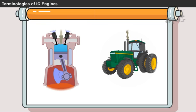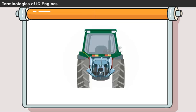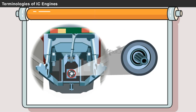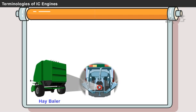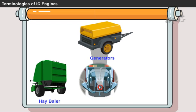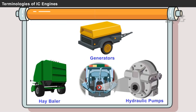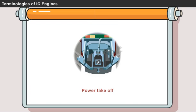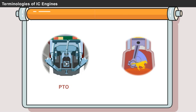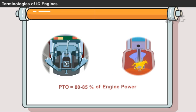Now, I will explain to you some of the additional work that can be done using this horsepower. In most of the modern tractors, a rotating shaft is coupled at the back in order to drive other machines like hay balers, generators, hydraulic pumps, etc. This is called as power takeoff or PTO. The PTO horsepower is around 80 to 85 percentage of tractor engine power.